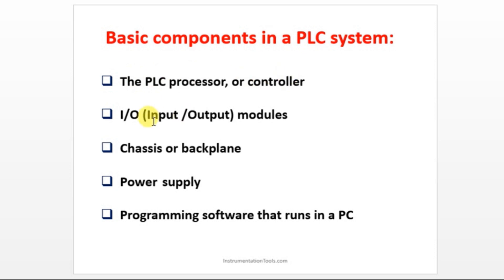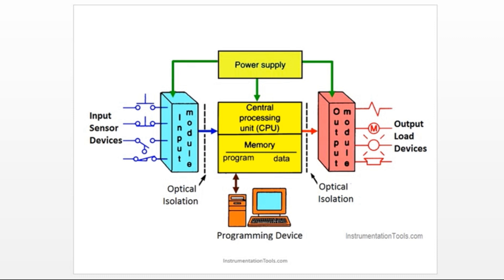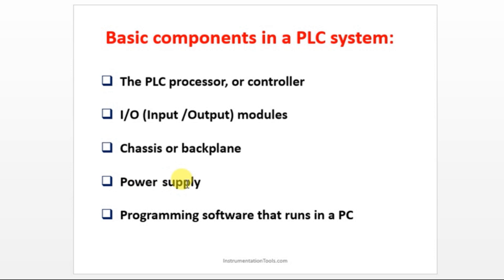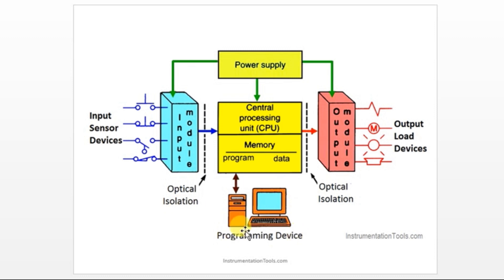The PLC components are: processor, I/O module, chassis or backplane — which is the rack where you plug in and plug out modules — power supply, and programming software that runs on a PC. Nowadays a PC is used as the programming device, but in older times handheld devices were used to write small programs.